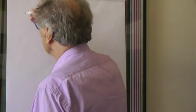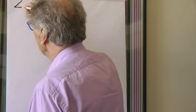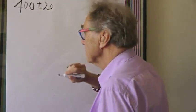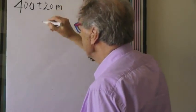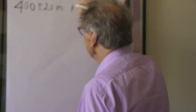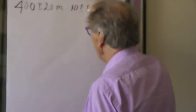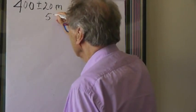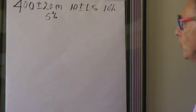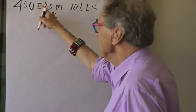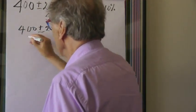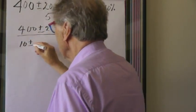We have 400 plus or minus 20 meters — that's a 5% error — and we do that in 10 plus or minus 1 seconds, which is a 10% error. So now we want to know what is the average speed, which is distance divided by time. I write it as 400 plus or minus 20, divided by 10 plus or minus 1.